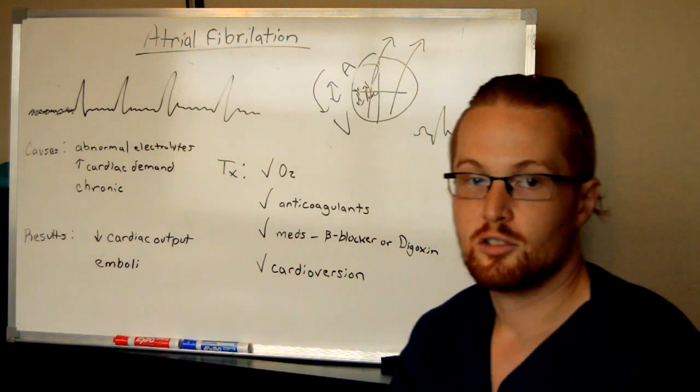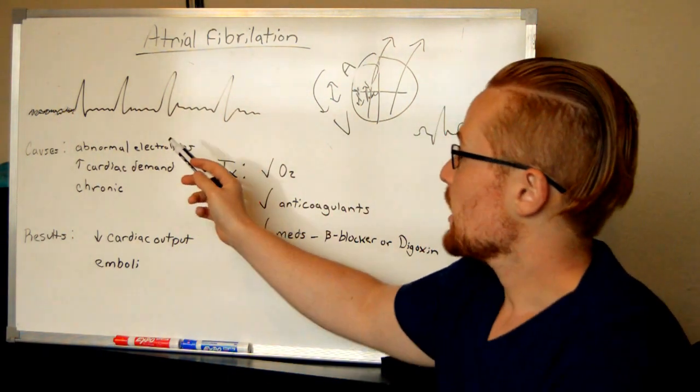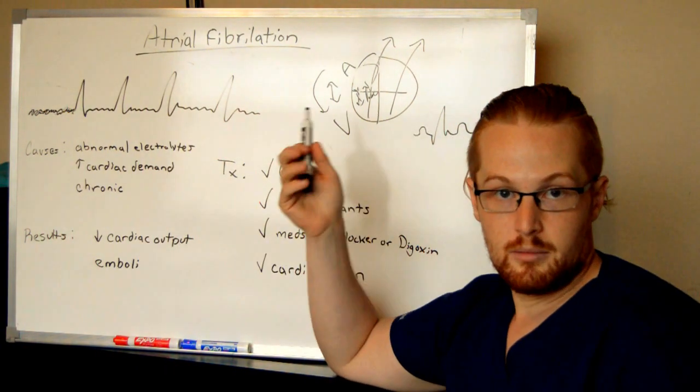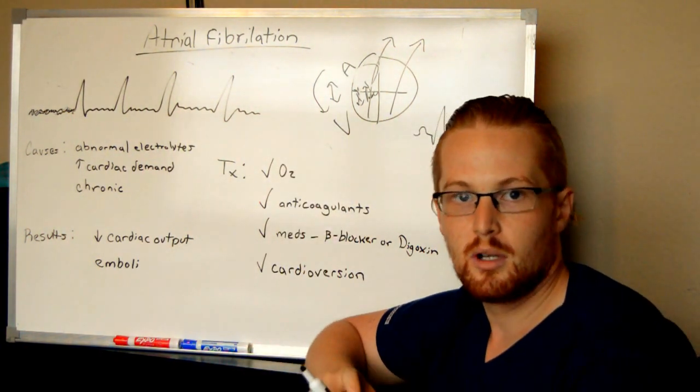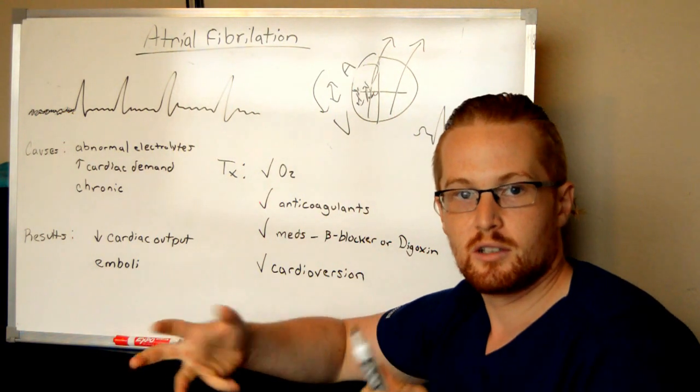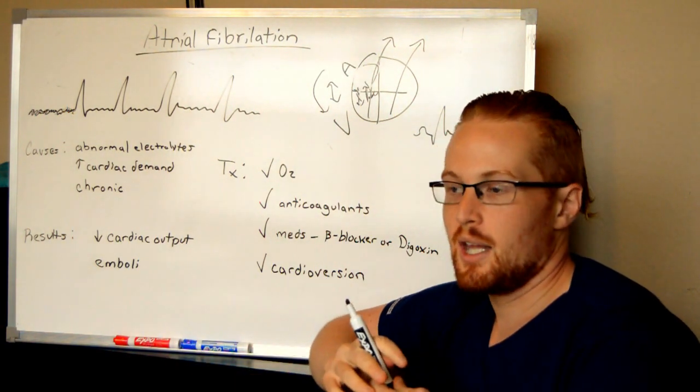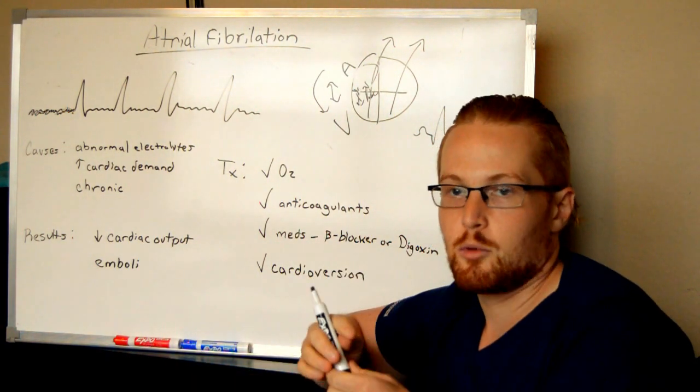So what are some causes of atrial fibrillation? Having abnormal electrolytes in the body. Potassium and magnesium, for example, are very important. And so when these electrolytes are thrown off, the heart may be firing abnormally.